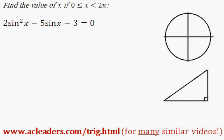Okay, let's find values of x between 0 and 2π, given 2sin²x - 5sinx - 3 = 0.